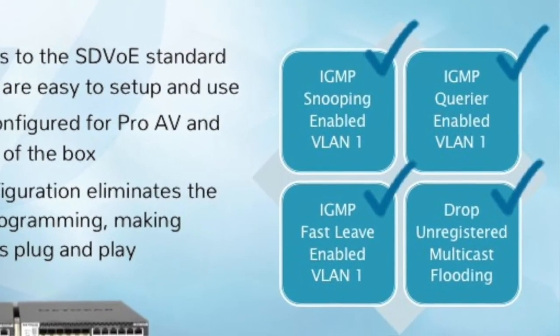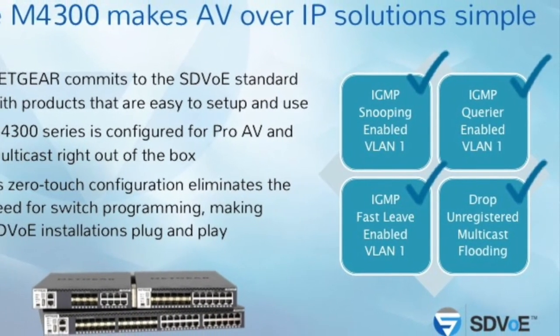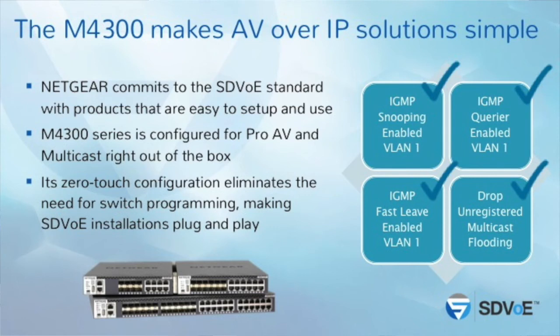Almost the end of today's presentation. IGMP snooping must be there and configured properly. IGMP querier must be there and configured properly. IGMP fast leave must be there and configured properly. The Netgear 4300 switches, elected here in the SDV Alliance as the switch platform of choice for video over IP, are pre-configured for that. We really tried at Netgear to provide a good out-of-the-box experience. For a single switch out-of-the-box installation, your AV encoders and decoders will be discovered and working directly without any configuration because IGMP is already preset.